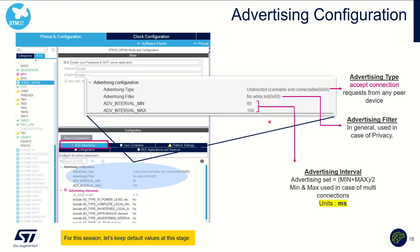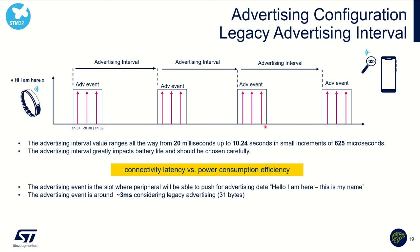Here is a basic overview of a legacy advertising frame. Advertising means the device is saying hello, I am here — broadcasting data over the air while the central smartphone is scanning. The specification says you need to send an advertising event on three channels: 37, 38, and 39. You must send these advertising events at each advertising interval, which can range from 20 milliseconds up to 10 seconds. In our case, roughly every 100 milliseconds.